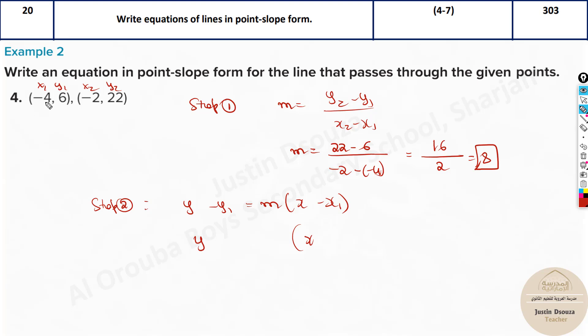I'll write the first point here. Now this is y minus y1 is 6 equals, what's the slope? 8 times x minus x1 will be minus 4, that will be plus 4 over here. This is one answer.